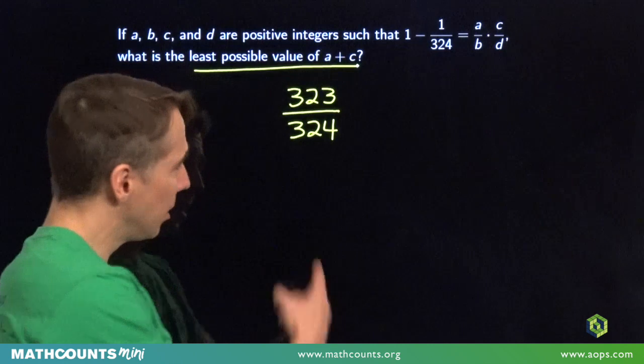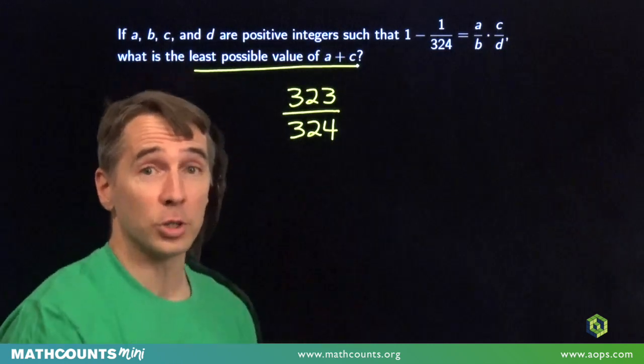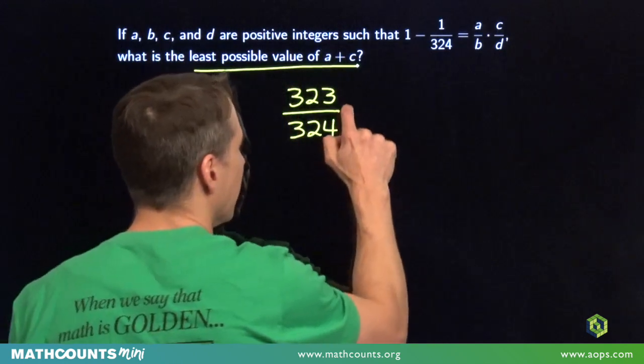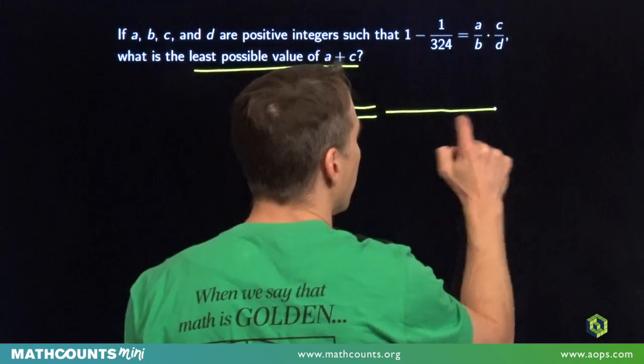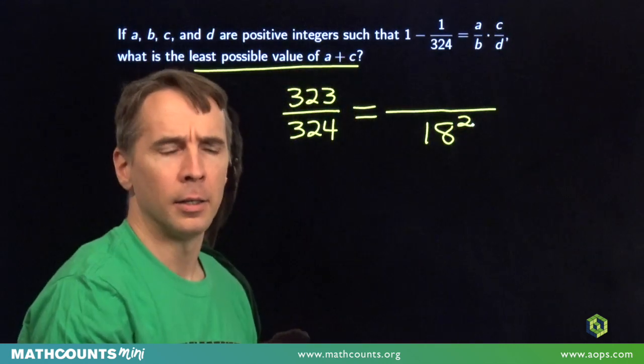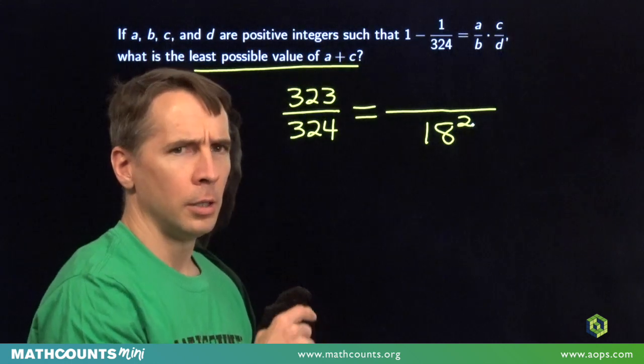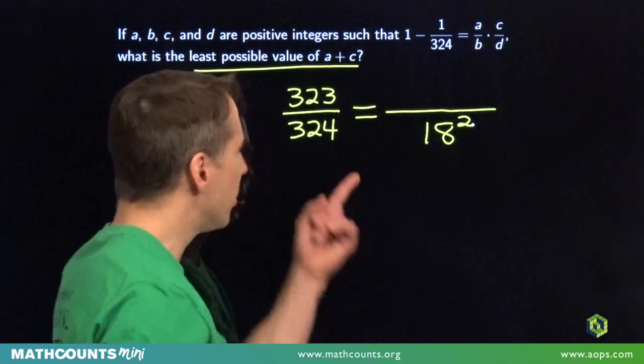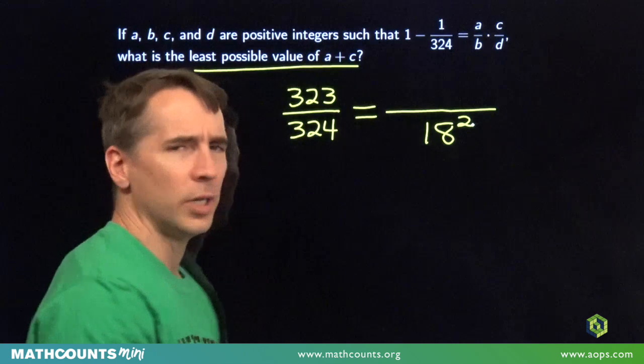Wait a second, check out this denominator, 324, I recognize that. 324, that's 18 squared. But this problem's not about the denominator, it's about the numerator, this 323.